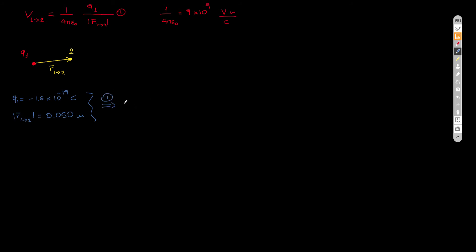From equation 1, this is equal to 9 times 10 to the 9 — that's the constant — times Q1, divided by the distance. This is equal to minus 290. If you do 9 times 1.6 divided by 0.05, you will find, with a minus sign, 290 times 10, and for the powers of 10, I have 9 plus 9 minus 19. This is going to be in volts.